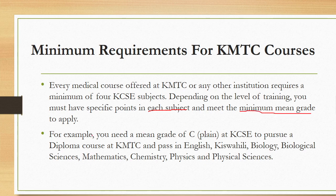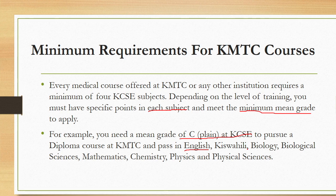For example, you need to have a mean grade of C plain in your KCSE in order to pursue a diploma course at KMTC or any other institution. You also need a pass in English, and other biological sciences or biology, maths, chemistry, physics, or any other physical science. Take note of these especially the underlined ones, because these are the must-have requirements to enroll for a diploma course.